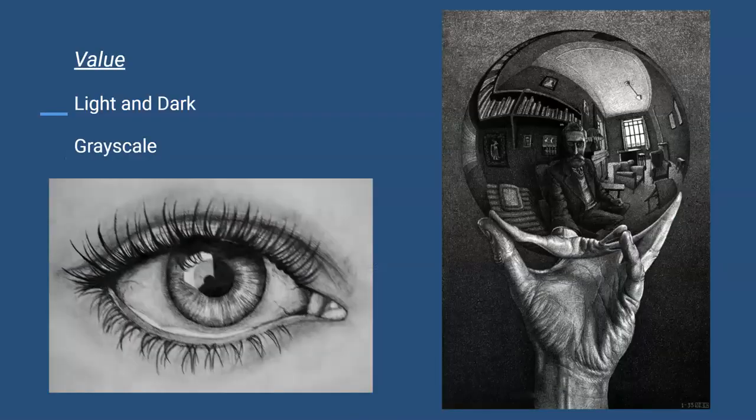And lastly, we have value. Value is using light and dark and everything in between, which is a lot of the grayscale. Like in this picture of the eye, you can see that the baseline of the eyelashes is the darkest, along with the pupil. And they even give off a reflection by using a lot more white towards the middle of the pupil, which is this area here. Or in this picture of the crystal ball, now the hand gives a lot of depth in the wrinkles, where the darker spaces are. Or the lighter spots here, you can see where the light's coming from. And since it's darker over here, you know the light's coming from this direction.